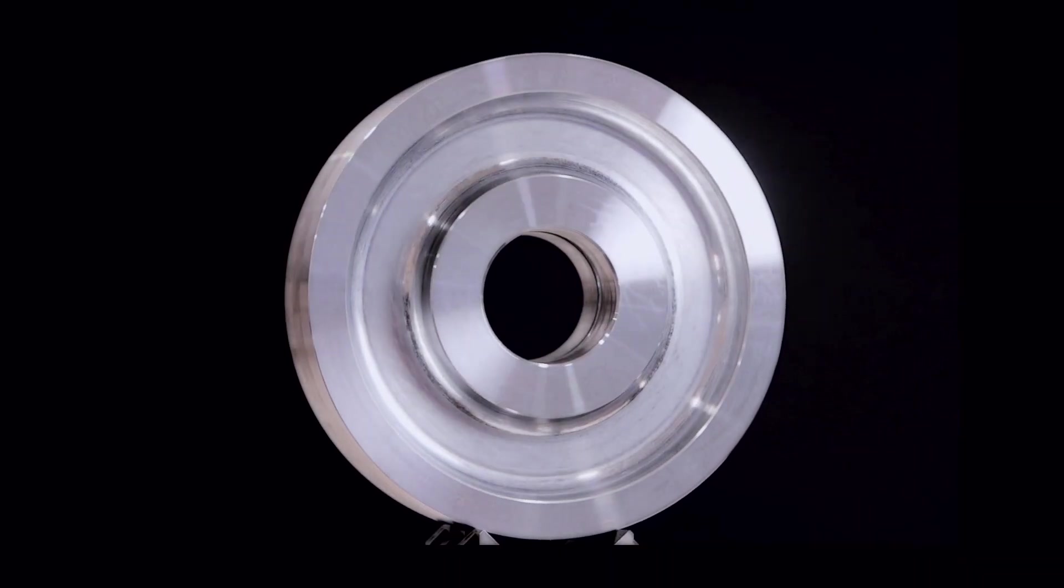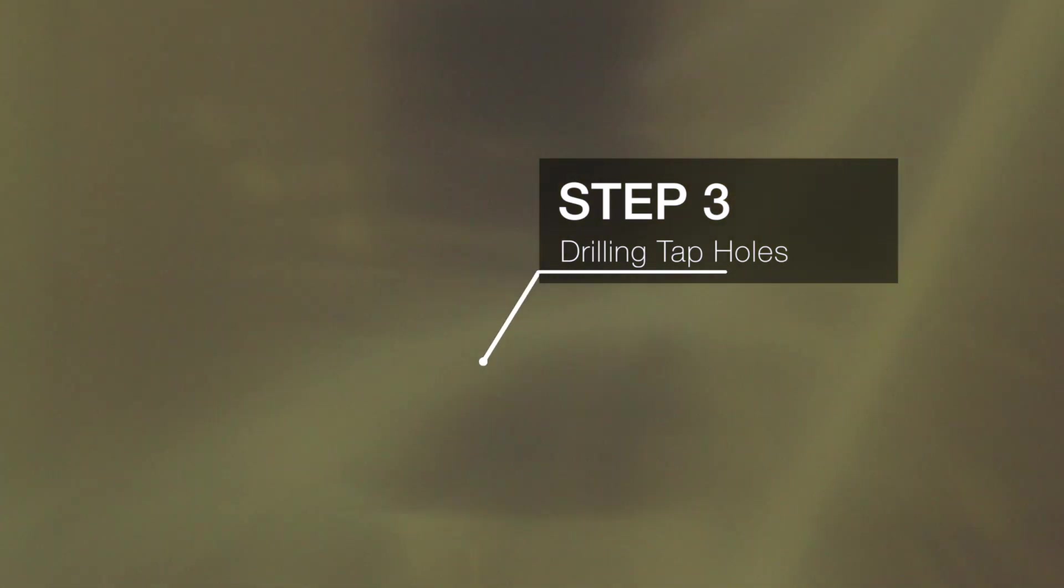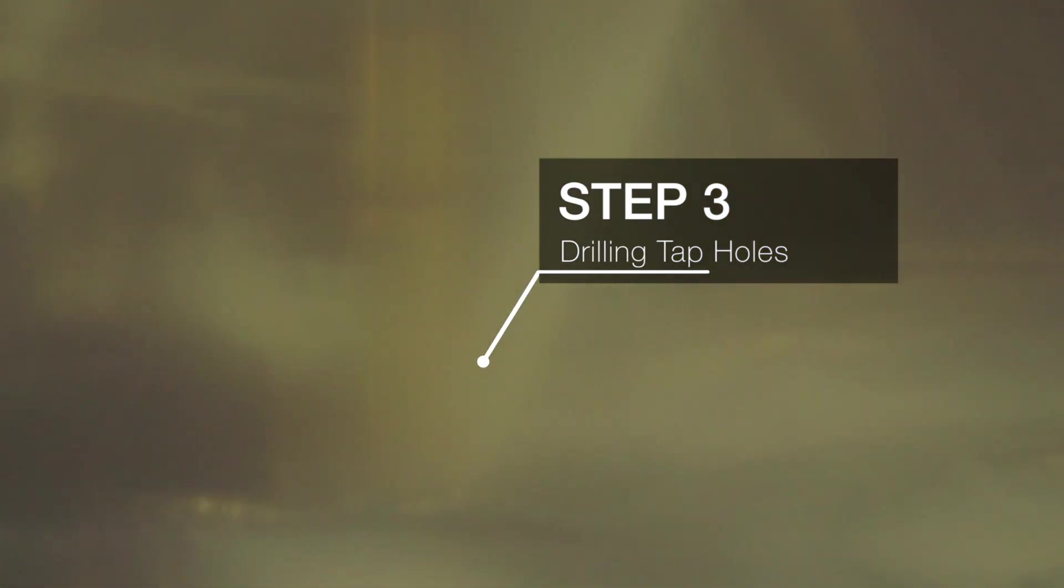We begin the turning process, rough turning the raw steel into the start of a highly engineered gear. We drill holes so the component can be assembled later in the manufacturing process.